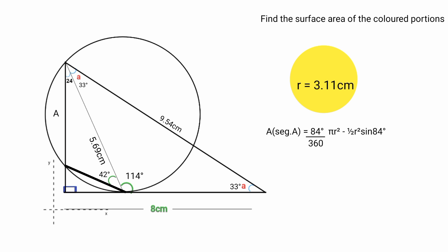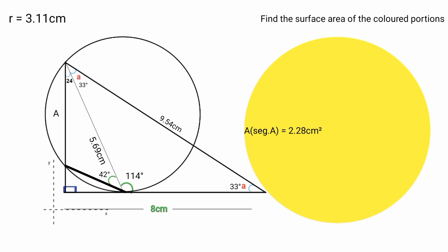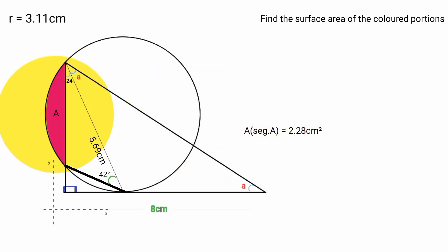Now substituting radius equals 3.11 cm: area of segment A equals 84 over 360 times 22/7 times 3.11 squared minus 1 over 2 times 3.11 squared times sin 84 degrees, which equals approximately 2.28. So area of segment A — the pink portion — is 2.28 cm squared.